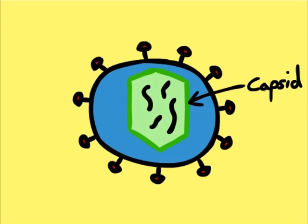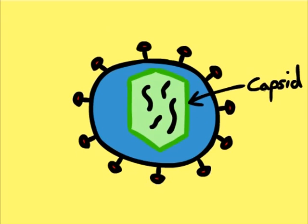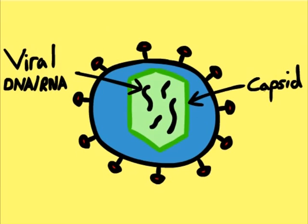Inside this capsid is either viral DNA or viral RNA. Also present is the viral envelope, which is covered in attachment proteins. The viral envelope is made of lipoproteins. So how do viruses reproduce?